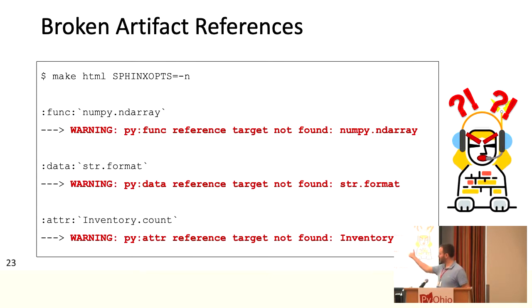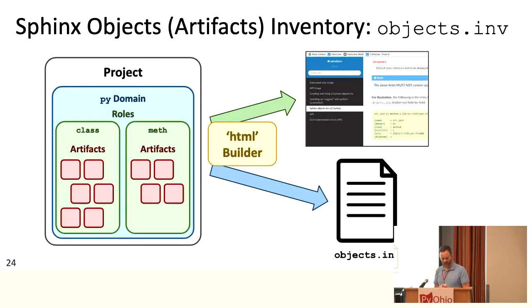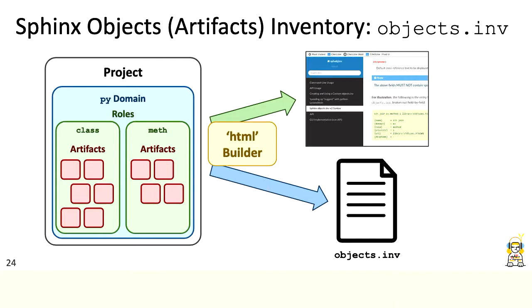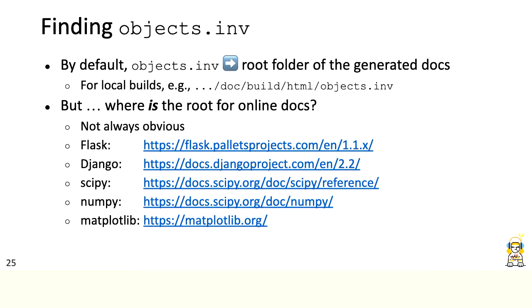How do you figure out how broken references should look? When Sphinx builds an HTML documentation set, in addition to building the documentation website itself, it dumps all information about the artifacts it's documenting into a file called objects.inv. This is where the awkward name for my project comes in: Sphinx Objects Inventory — SvabjInv. Any time you have an HTML build, you have an objects.inv.